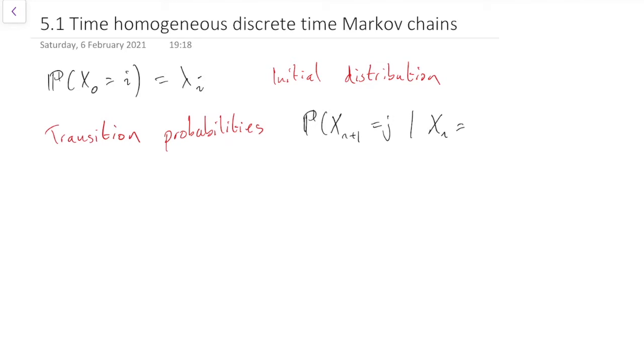So that's the probability that xn plus 1 equals j, given xn equals i. Because that's the probability that we move from being i at time n over to j at time n plus 1.